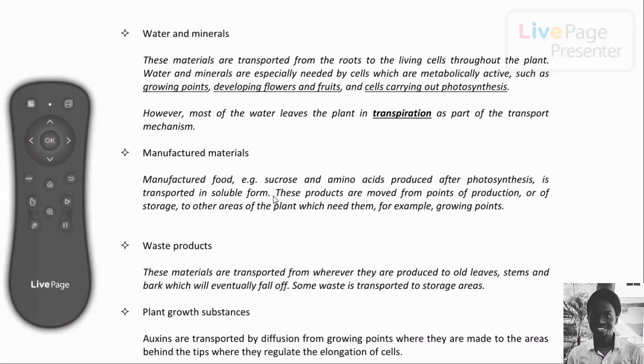It is important to note that most of the water leaves the plant in transpiration as part of its transport mechanism. Transpiration is a process where water is lost from the surface of leaves through the stomatal pores.